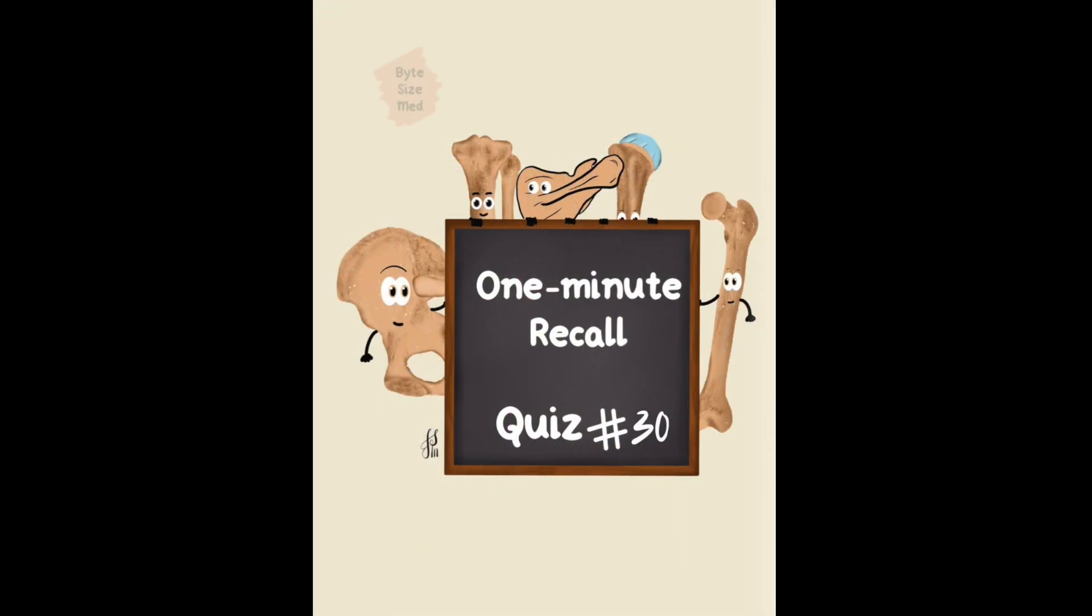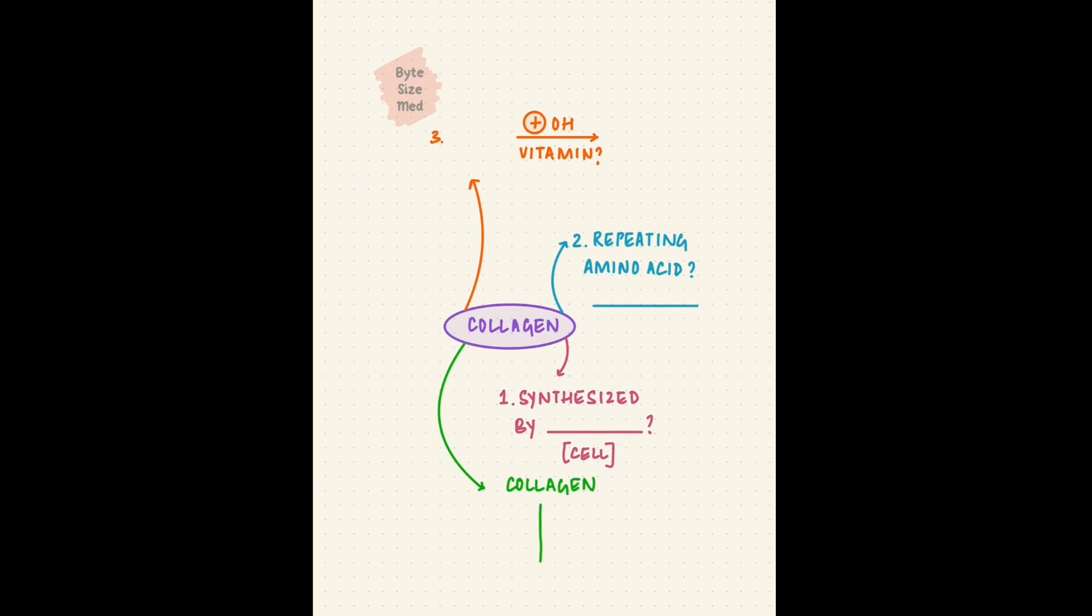The most abundant protein in connective tissue is collagen. Your task is to recall which cell synthesizes collagen. Collagen has a repeating amino acid sequence. Which amino acid is consistently present in that sequence? Collagen synthesis has a few key enzymes. One is involved in hydroxylation. Which vitamin is needed for that step? Collagen gets cross-linked by an enzyme dependent on which mineral. You can pause the video here and take as much time as you need to recall what you know about collagen synthesis. But I just get one minute, so time's up.